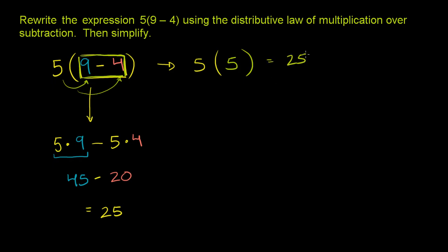So we get the same answer either way. This is using the distributive law of multiplication over subtraction, usually just referred to as the distributive property. This is evaluating the inside of the parentheses first, and then multiplying by 5.